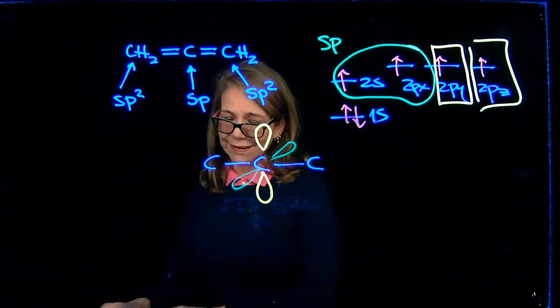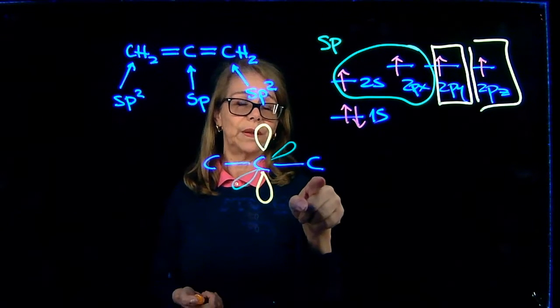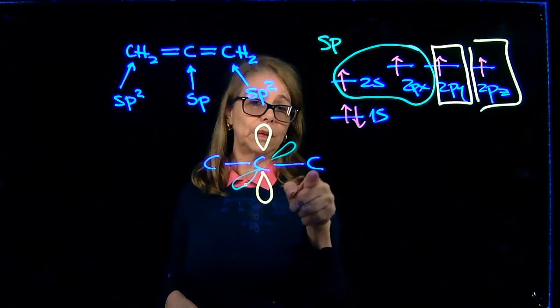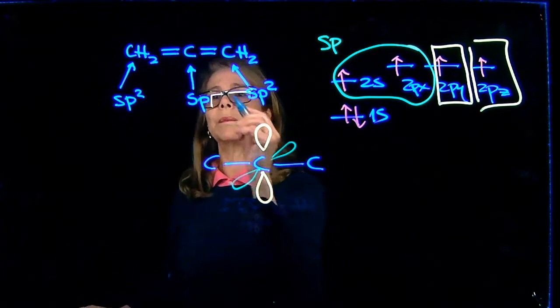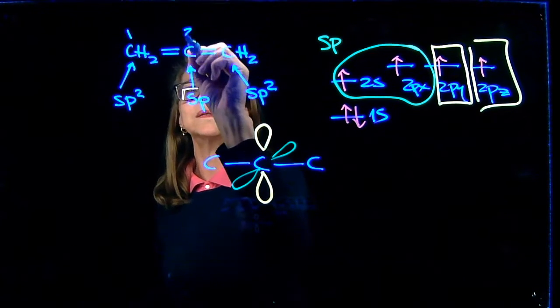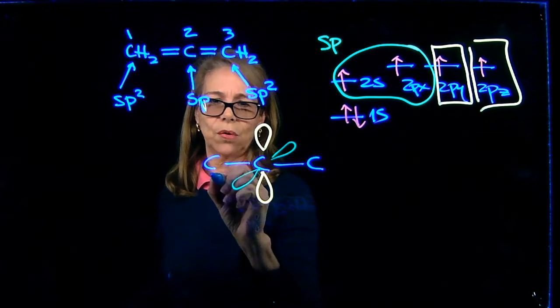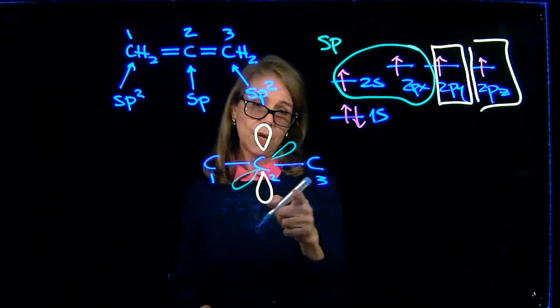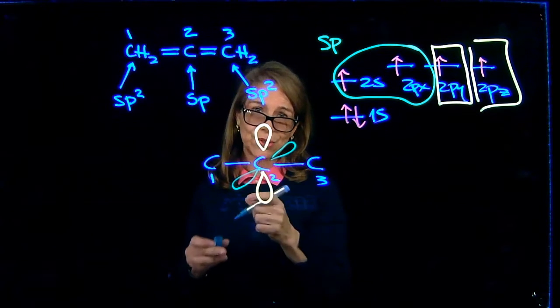Now notice that the carbon here, this one here, is making a double bond. So there is a pi bond between. I'm going to number the carbons. Say 1, 2, 3. So 1, 2, and 3. So there will be a double bond. So a pi bond between carbons 2 and 3.